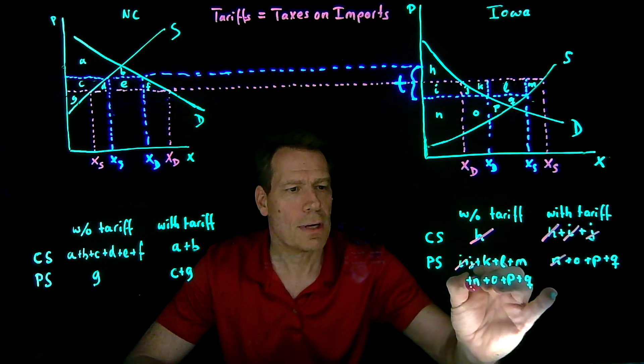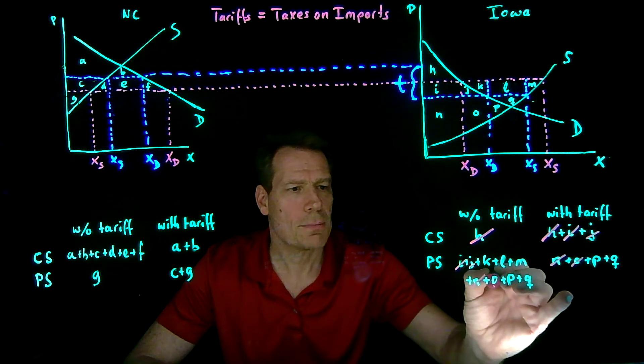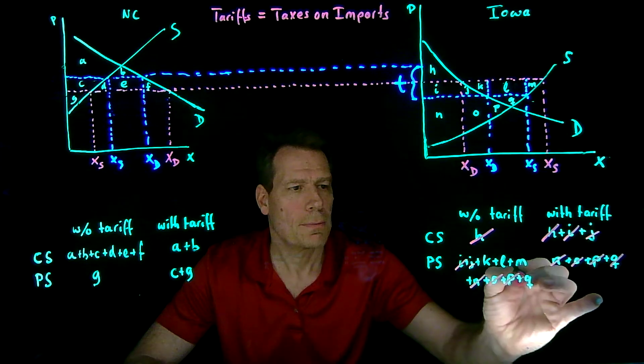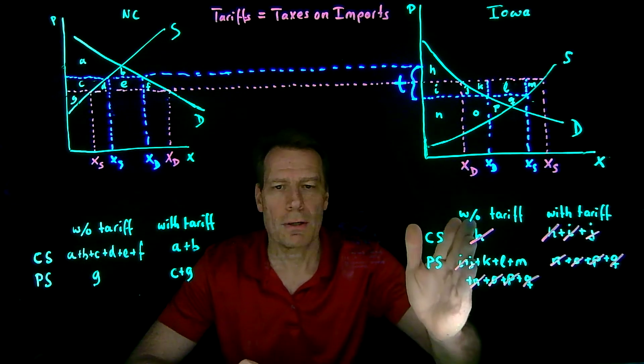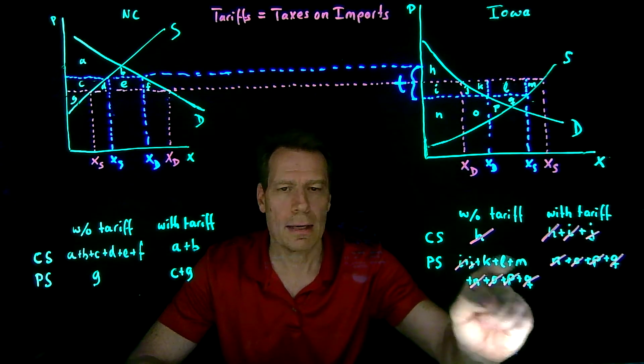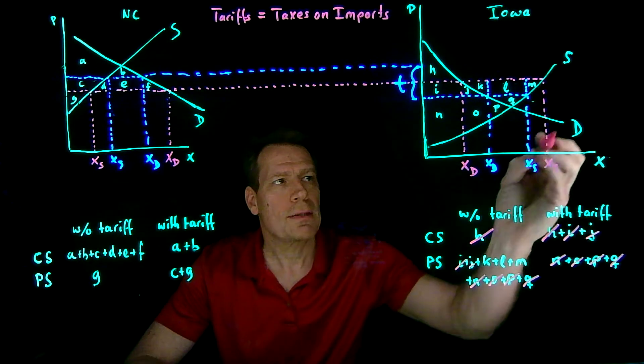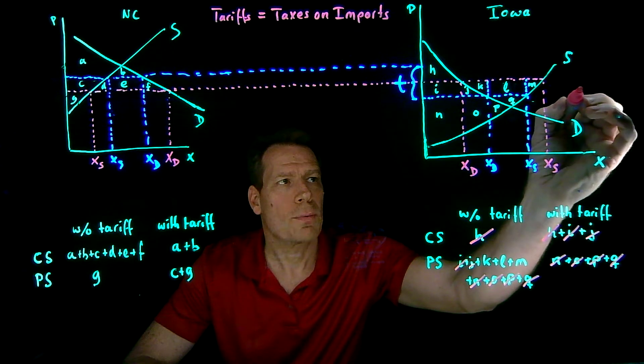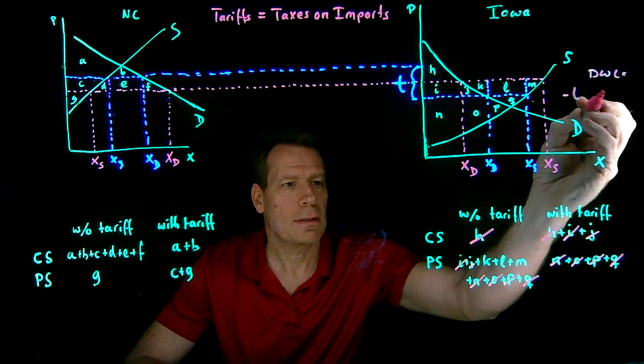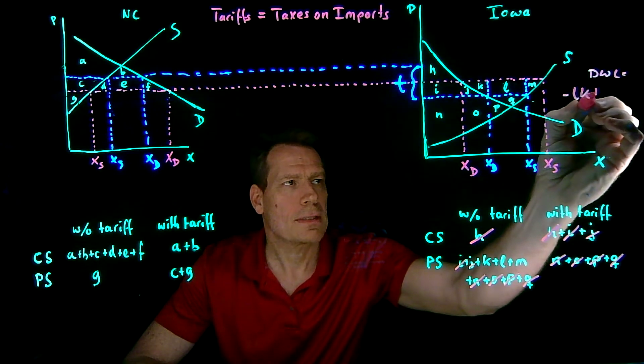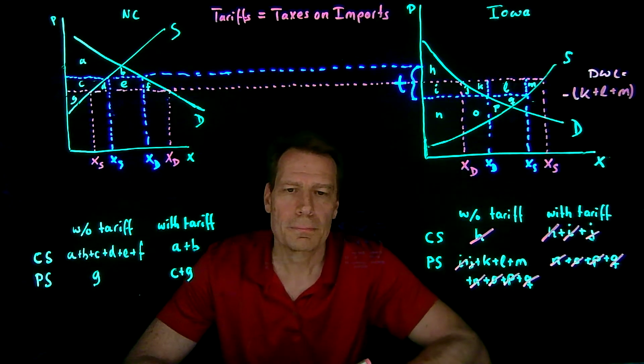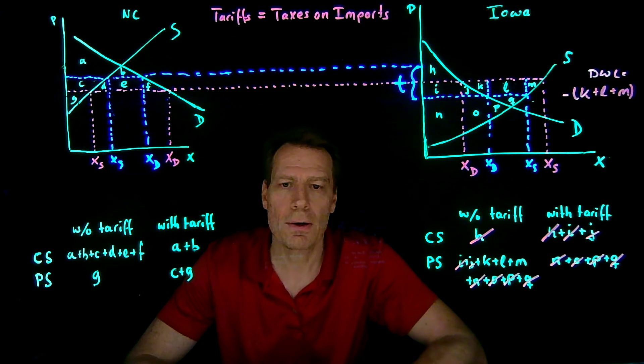The N happens on both sides. The O happens on both sides. So there's the P and the Q. So when we go from the without tariff case to the tariff case, we're losing K, L, and M. So the deadweight loss in Iowa is equal to, we're losing K plus L plus M. That's the change in surplus. That's the deadweight loss.